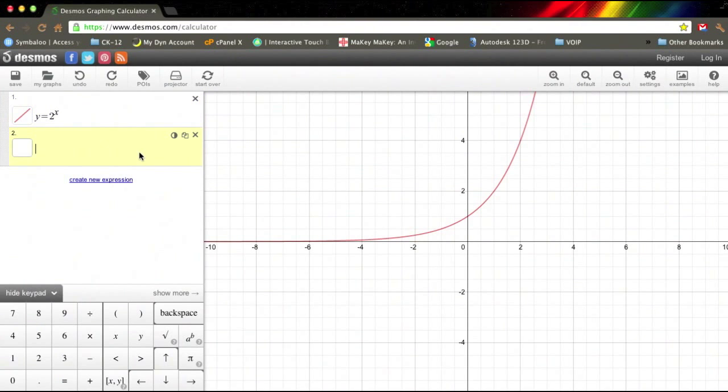Then you can just choose an expression, type in your next one. Y equals 2 to the power of, and then we use the parentheses, in parentheses x plus 1, and there it's got that graph for you, and that one's in purple.